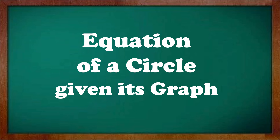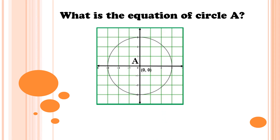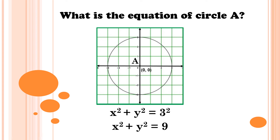Let us discuss now the equation of a circle given its graph. What is the equation of circle A? We have circle A with the center located at the origin, wherein the coordinates are (0, 0). So the equation of the circle is x squared plus y squared is equal to 3 squared. The radius is 3 — we count from the center of the circle: 1, 2, 3. Therefore the value of r is 3, and simplifying, the equation of circle A is x squared plus y squared is equal to 9.